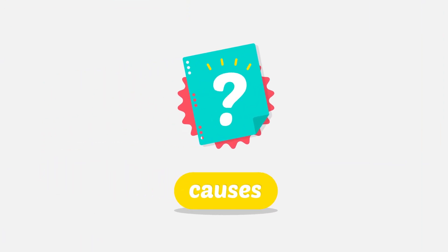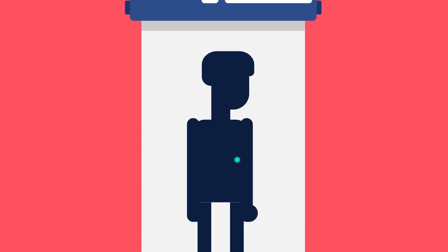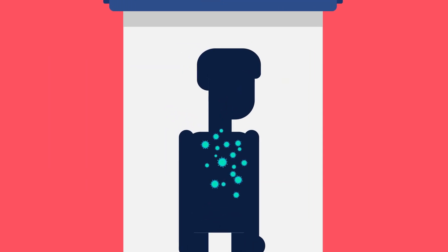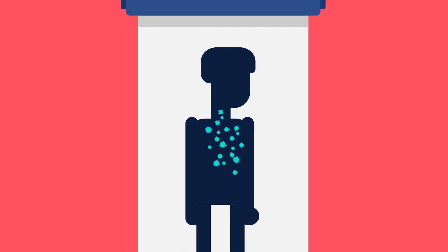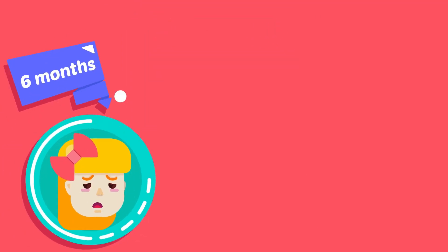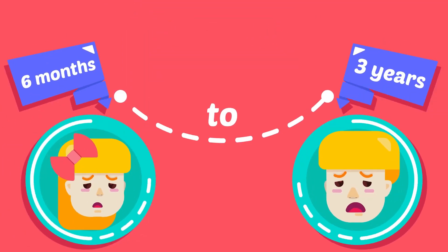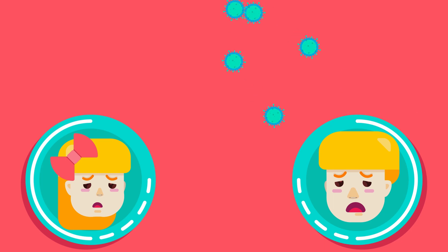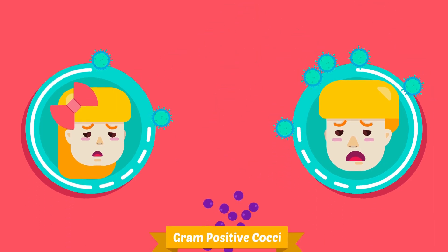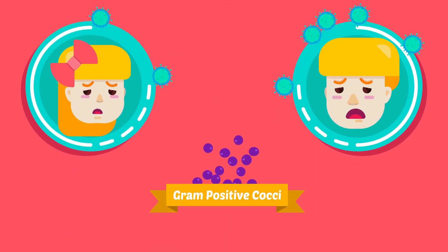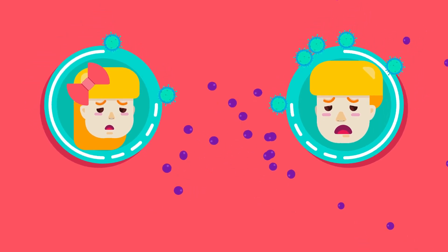What causes acute laryngotracheobronchitis? Mostly it is viral infection — para-influenza type 1 and 2 — affecting children between 6 months to 3 years of age. Male children are more often affected. Secondary bacterial infection by Gram-positive cocci soon supervenes.